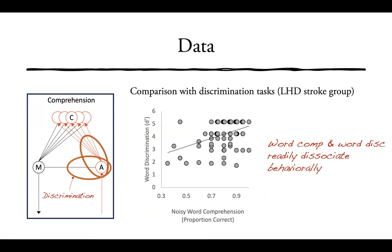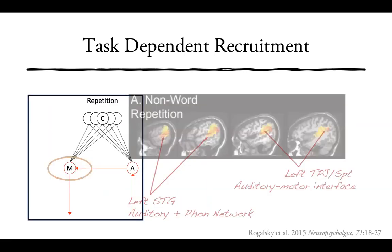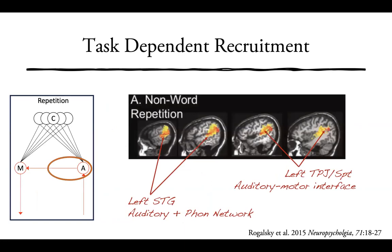Looking at repetition, several studies — including one of ours — associate repetition ability (in this case, non-words) with the left superior temporal gyrus — auditory and phonological networks — as well as the left TPJ, or what we call SPT, the auditory-motor interface. Whereas comprehension involved the ventral portion of the network, repetition seems to involve this more dorsal portion.